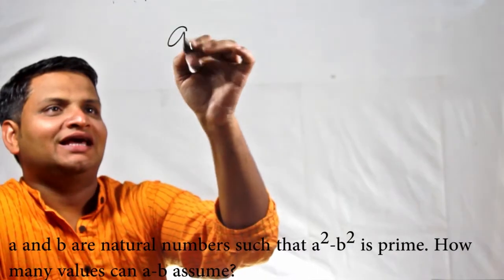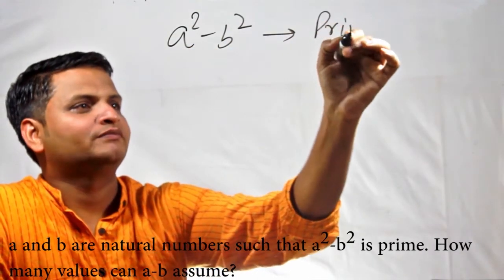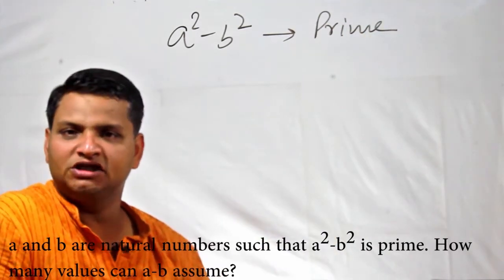Now, in this question, a² - b² is given as prime. The question says how many values can a - b assume?